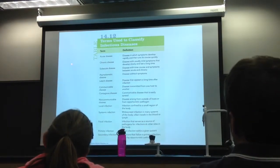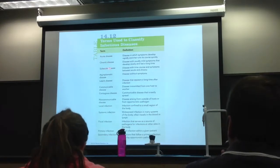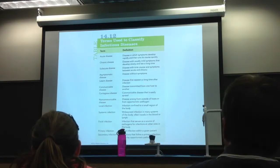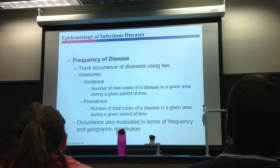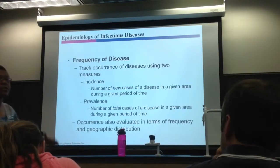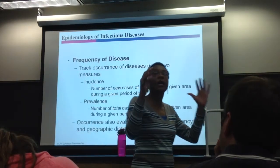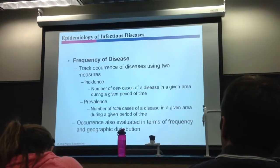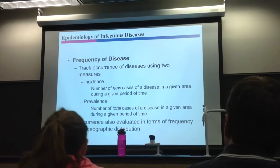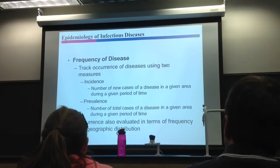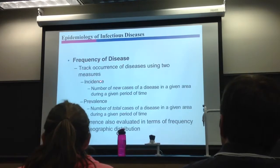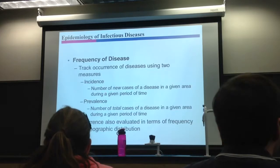Summary: know acute, chronic, subacute, latent, communicable, contagious, and non-communicable. Now everything is about epidemiology — tracking disease in terms of incidence, occurrence, frequency, where diseases are, and what causes them.